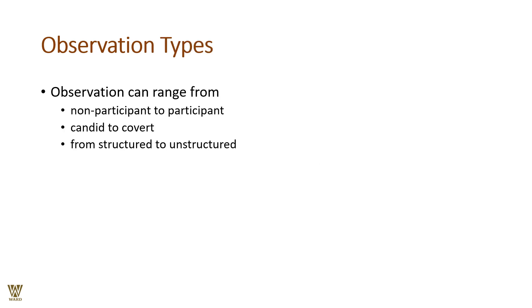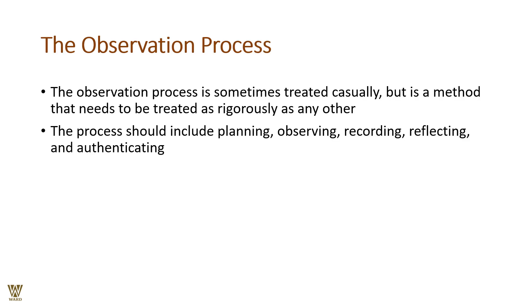Observation types range from non-participant to participant — from a non-actor to an actor in the scheme of things. It can be candid, meaning open and frank, or covered, meaning you are there as an observer that nobody is aware of. Observation can also range from structured to unstructured. The observation process is sometimes treated casually, but it should be as rigorous as any other method.